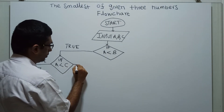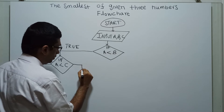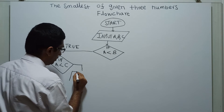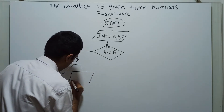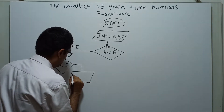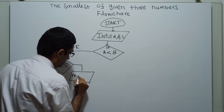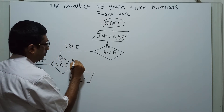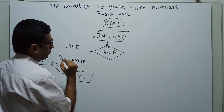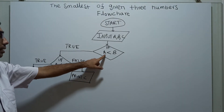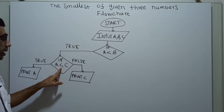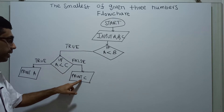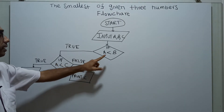If A less than C is false, I am printing C. A is less than B is true, but A is not less than C. That means C is less than A. Since A is less than B and C is less than A, I am printing C.